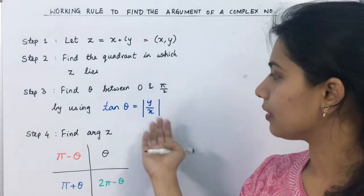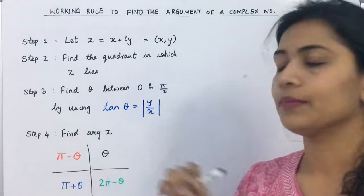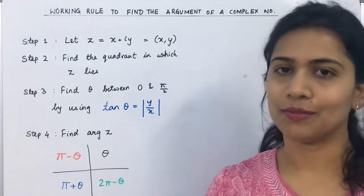Then, this time we will find the value for argument z using this table. Let us see with the help of example.